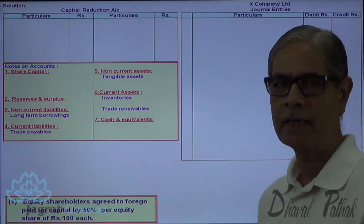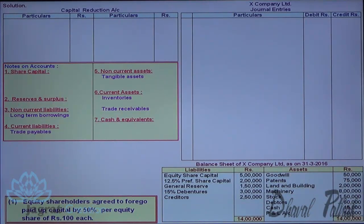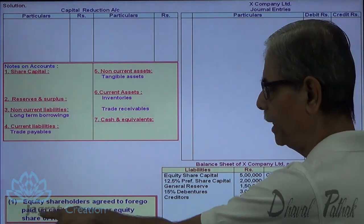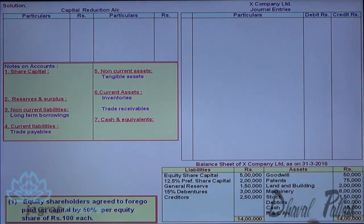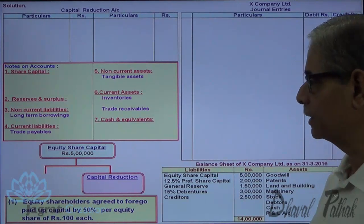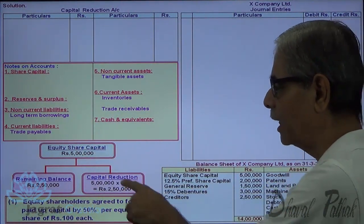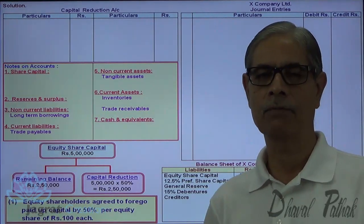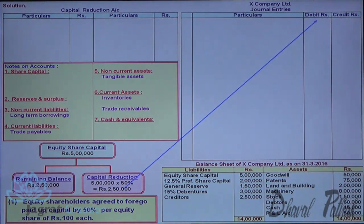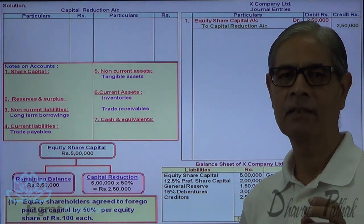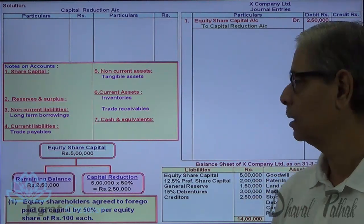The first adjustment: equity shareholders agreed to forego paid-up capital by 50%. Equity share capital is Rs. 5 lakhs. Capital reduction is 50%, so 5 lakhs minus 2 lakhs 50,000 — the remaining is 2 lakhs 50,000. The journal entry: Equity Share Capital Account debit, to Capital Reduction Account credit, being paid-up value of equity shares reduced by 50%.